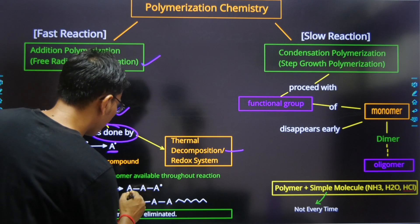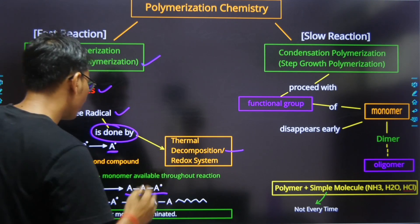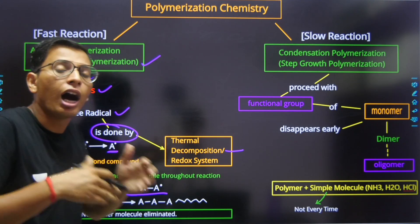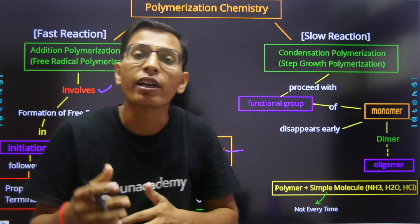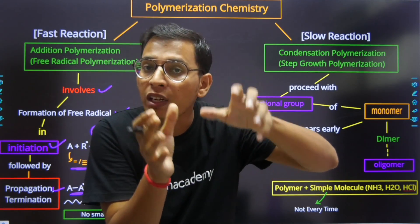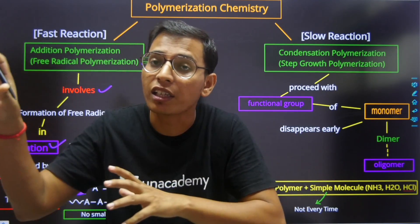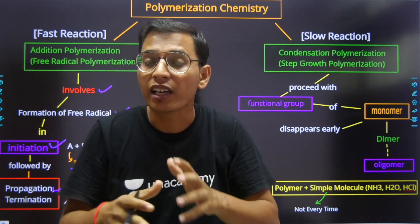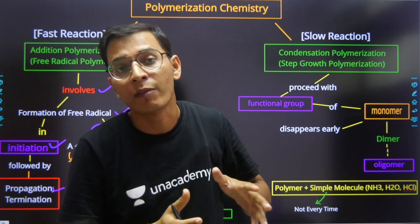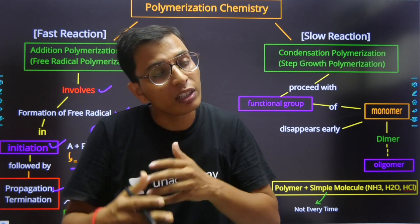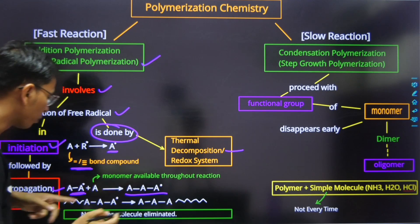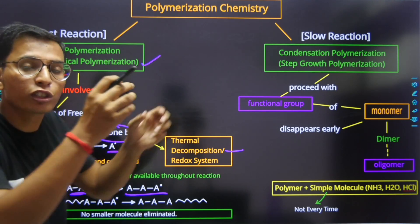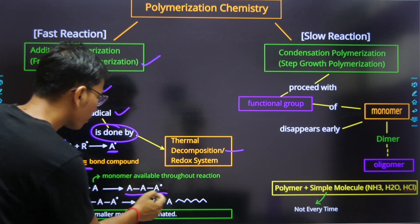The chain propagates and ultimately, the monomer will be available throughout the reaction — the monomer continues to be available as the chain grows throughout the reaction.